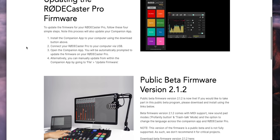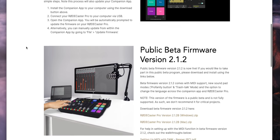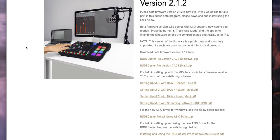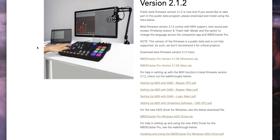On the download page for the firmware, you just download the new companion app, open it up, and it will update your RODECaster to the beta. And of course this is all beta firmware, so you beta believe that things could change in time.